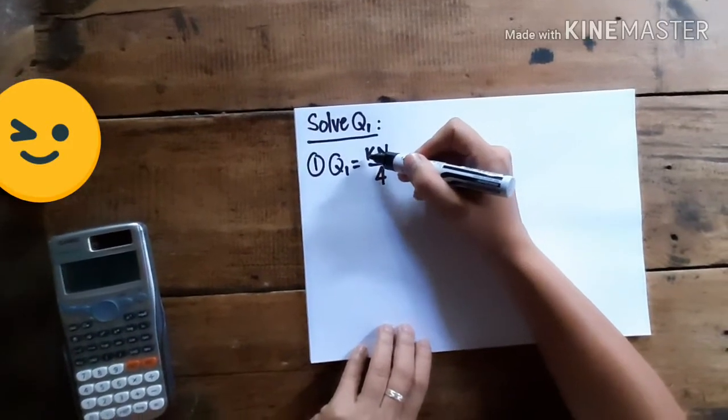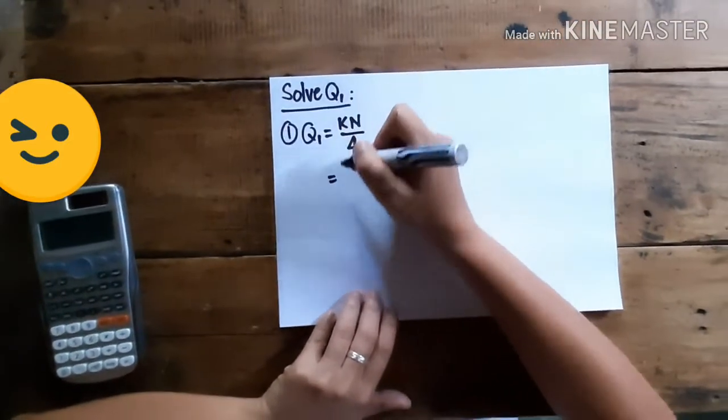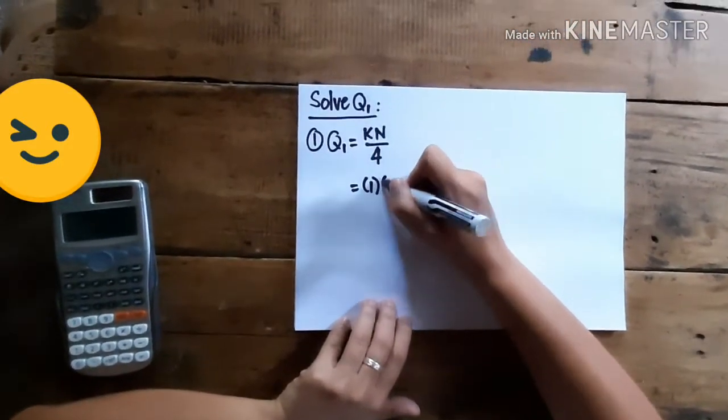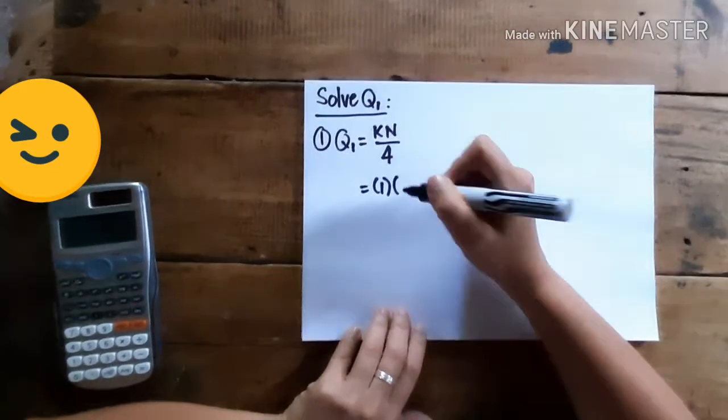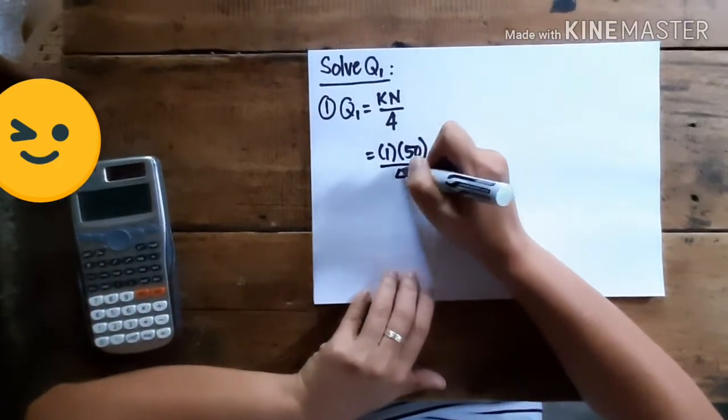And this K is based on what number we have here. So that means this K will be replaced with 1. And then, if we remember, our N is 50, and then we divide that by 4.